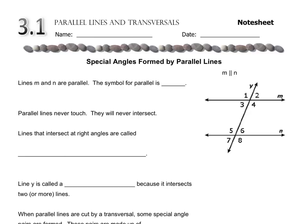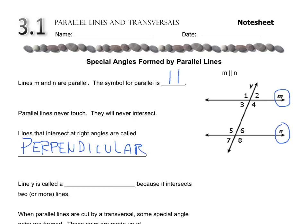Today we want to talk about parallel lines and transversals. From the picture, lines M and N are parallel. The symbol for parallel lines is two straight lines going down. Parallel lines never touch — the distance between them is always the same. They will never intersect. Lines that intersect at right angles are called perpendicular lines, which you may recall from our introductory pre-3 activity.